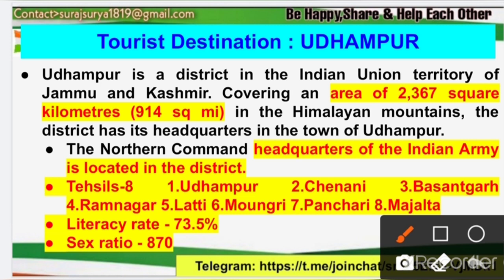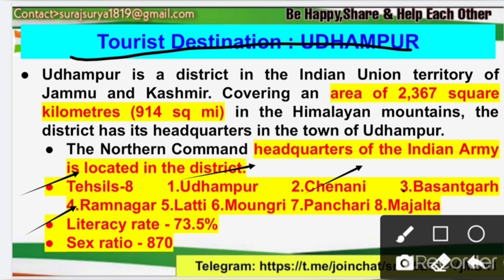This is the most important tourist destination. Dear learners, the district of our Jammu and Kashmir region is important. If you talk about the area of this region, it is 67 square kilometers, which is 914 square miles. If you talk about the literacy rate, then 73.5% is the literacy rate here. And if you talk about the tehsils, there are 8 important tehsils located in this district.